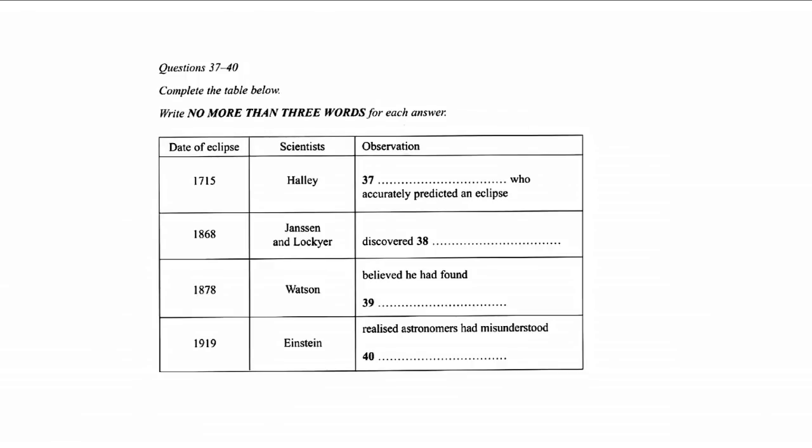For instance, in the eclipse of 1868, two scientists, Janssen and Lockyer, were observing the sun's atmosphere, and it was these observations that ultimately led to the discovery of a new element. They named the element helium, after the Greek god of the sun. This was a major find, because helium turned out to be the most common element in the universe after hydrogen.